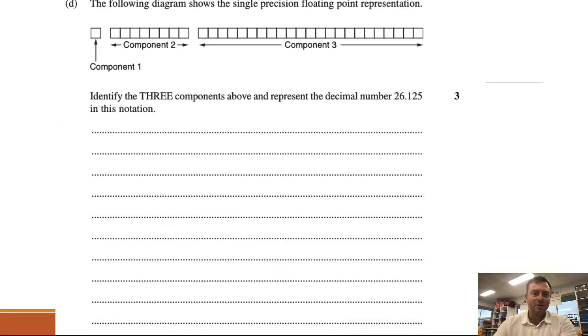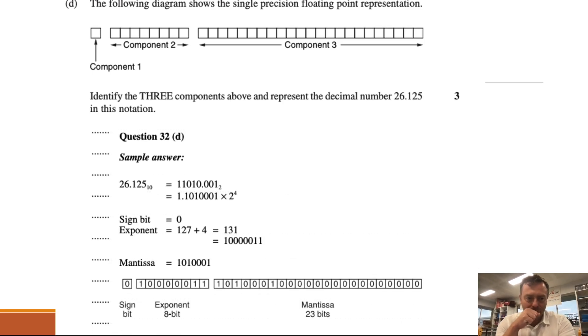So here's a necessary question. So the following diagram shows the single precision floating point representation, identify three components above and represent the decimal number 26.125 in this notation. So you would go through that process that we just did. And so you would talk about how the sign bit would be the zero at the start and change the 26 into integer form and then 125 you'll see that those are the different columns. So the zeros and the ones. And then basically you go through the sign bit, the exponent you'd add on 127 to the exponent to get 131, put in the mantissa, put in the sign bit and then put the exponent in.